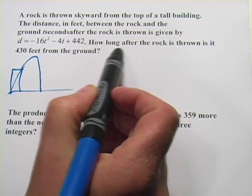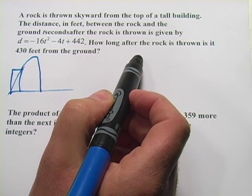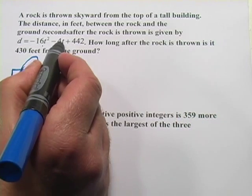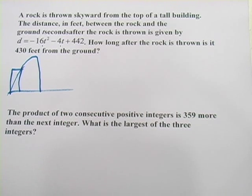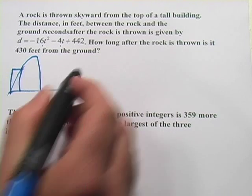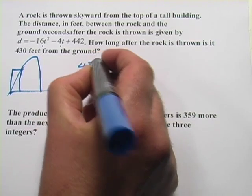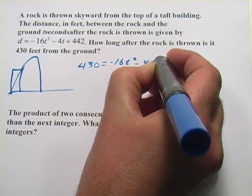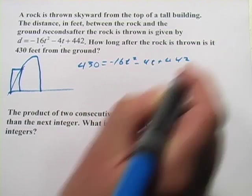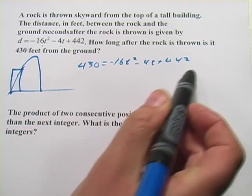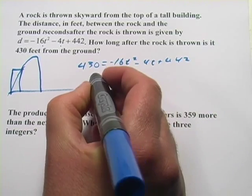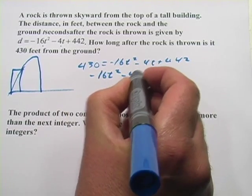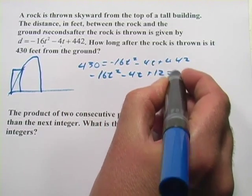So the question is how long after the rock is thrown is it 430 feet from the ground? So what we're doing is we're solving for t when d equals 430 feet. So let's sub in 430 for d. So 430 = -16t² - 4t + 442. And we'll subtract 430 from both sides to set this equal to 0 and we'll get -16t² - 4t + 12 = 0.